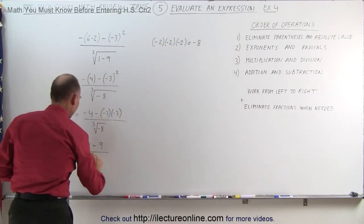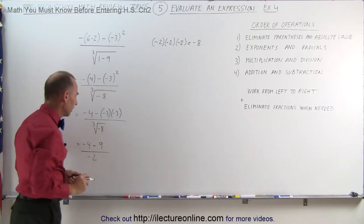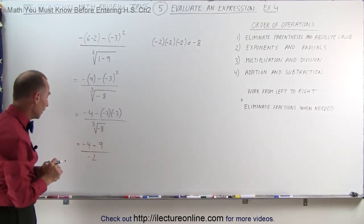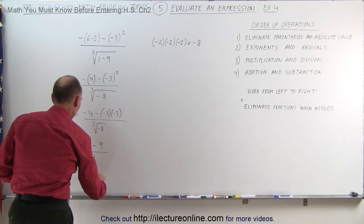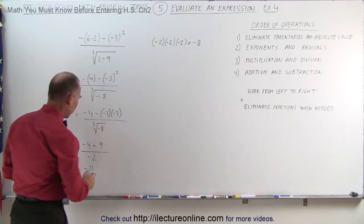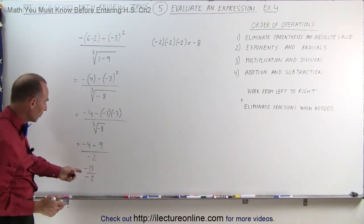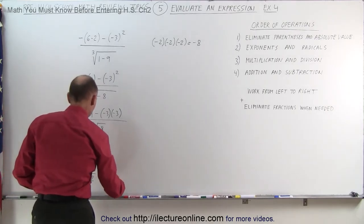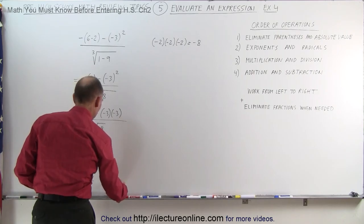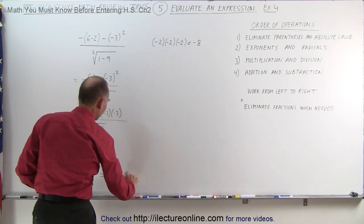Which means we can write this as negative 2. Now we need to simplify the numerator. So this gives us minus 4 minus 9 is minus 13, divided by minus 2. And of course, when we have one negative number divided by another negative number, that cancels out. So this is equal to 13 divided by 2, or it could be written as 6.5.